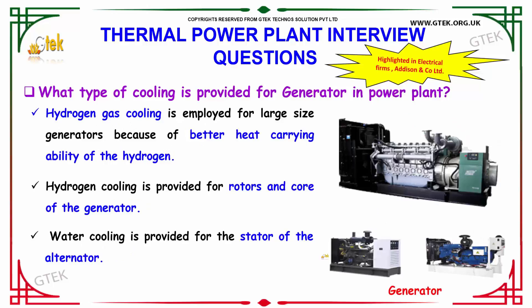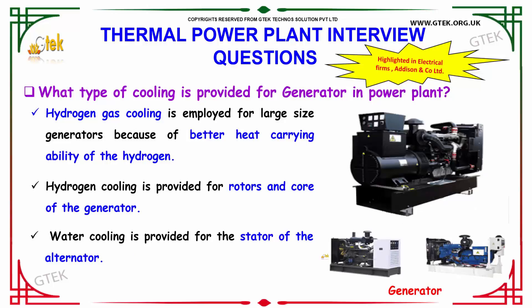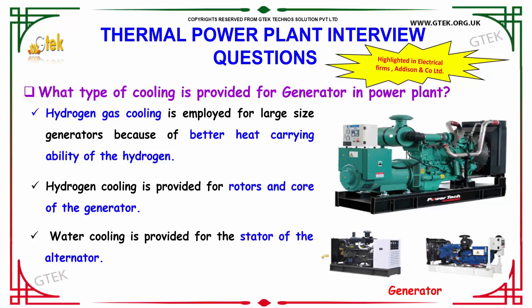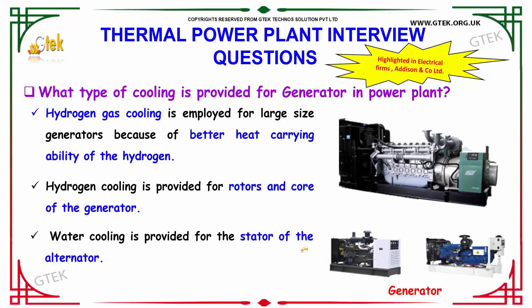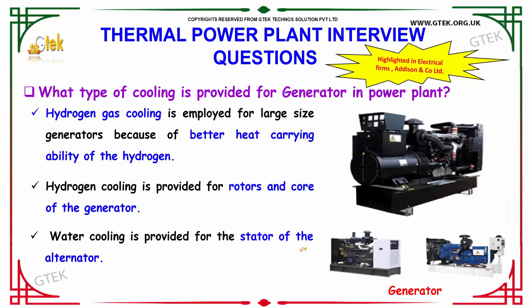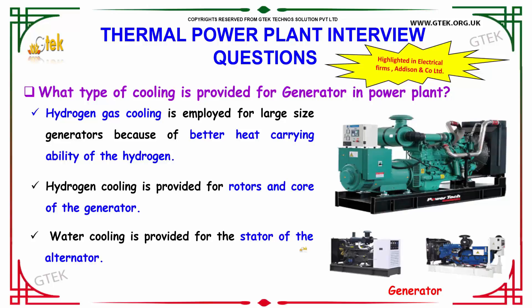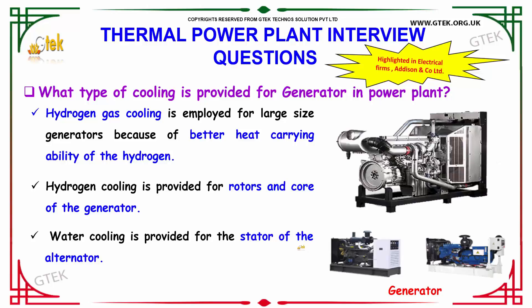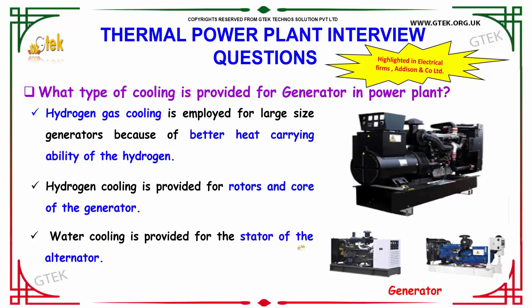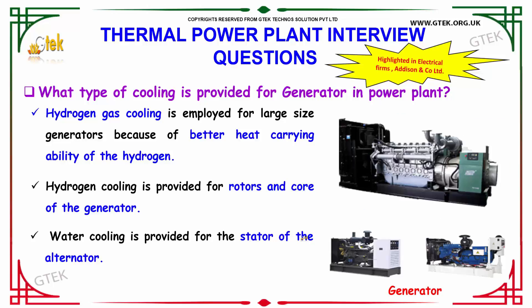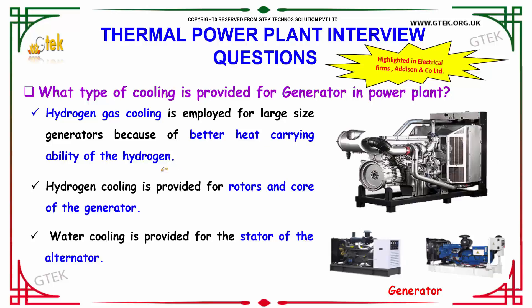What type of cooling is provided for generators in power plants? Hydrogen gas cooling is employed for large-size generators because of the better heat-carrying ability of hydrogen. Hydrogen cooling is provided for the rotor and core of the generator, while water cooling is provided for the stator of the alternator.